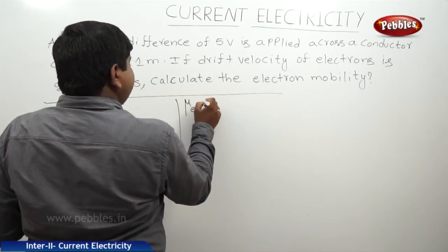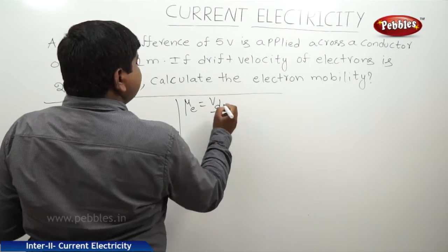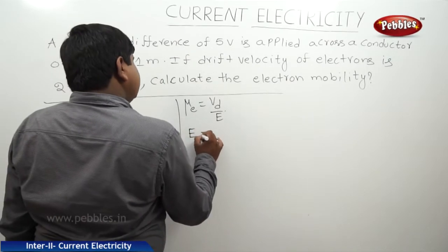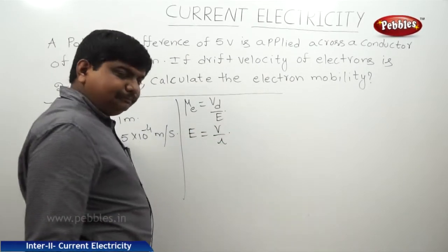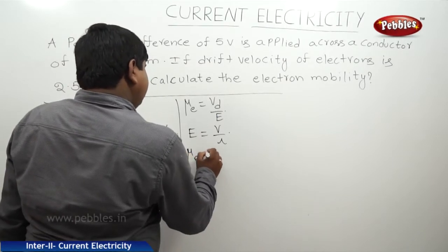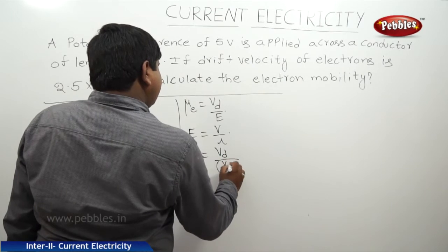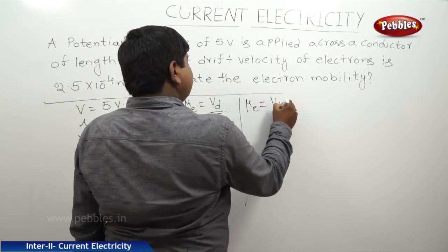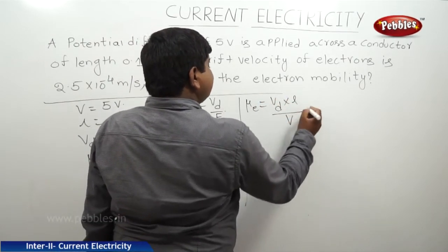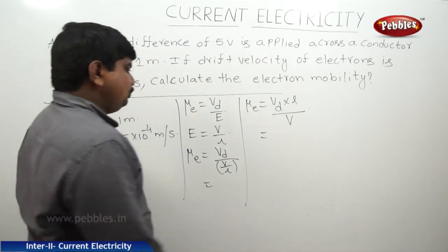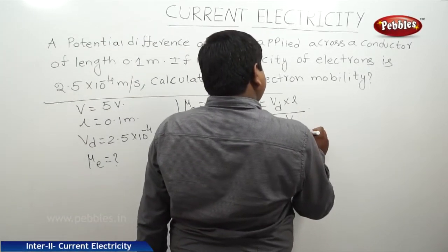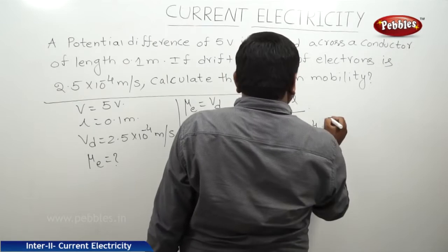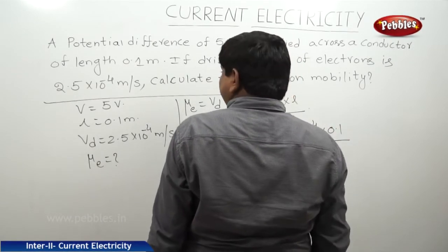We know that electron mobility mu_e equals Vd divided by E. We first find E, where E equals V divided by L. Therefore, mu_e equals Vd times L divided by potential. The drift velocity is 2.5 into 10 to the power of minus 4, the length of the conductor is 0.1 meter, and the potential applied is 5 volts.